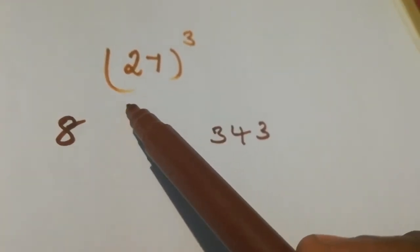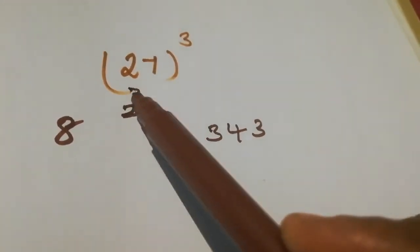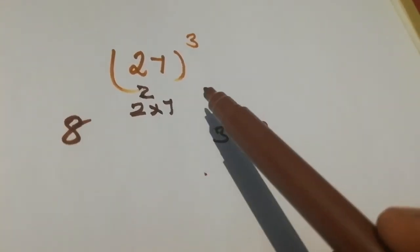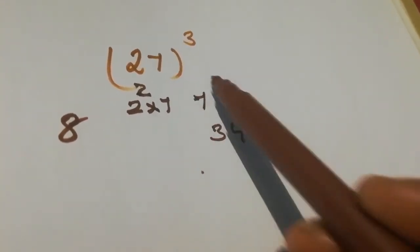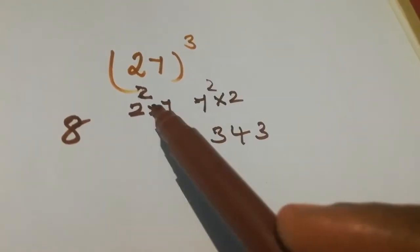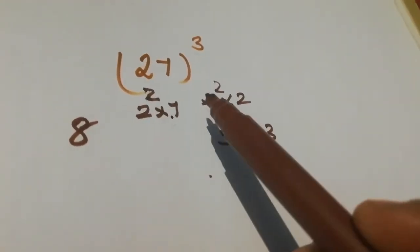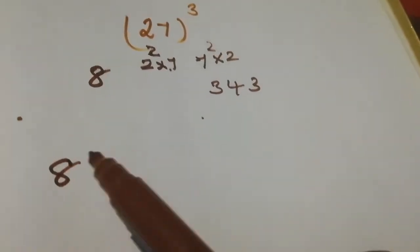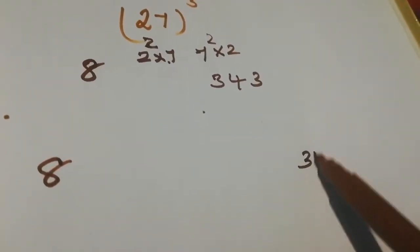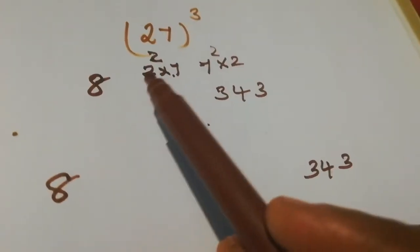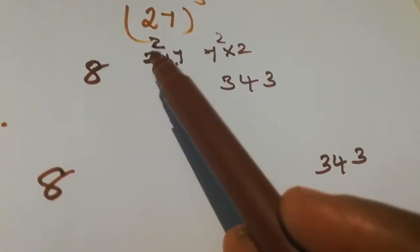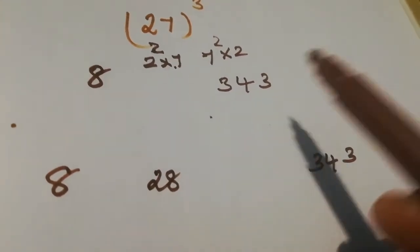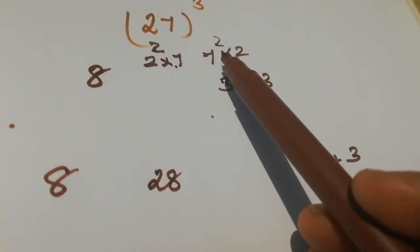Next, we take the square of the first digit: 2 squared into 7, and then 7 squared into 2. So what we get here: 8 and 343. What is 2 squared? 2 squared is 4. 4 into 7 is 28. 7 squared is 49. 49 into 2 is 98.